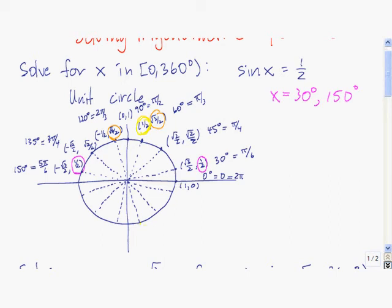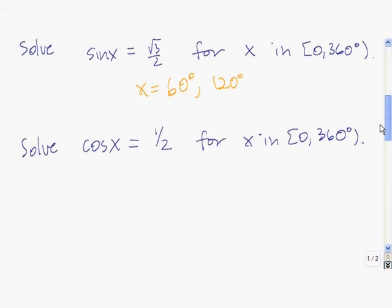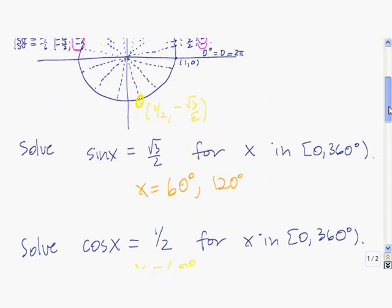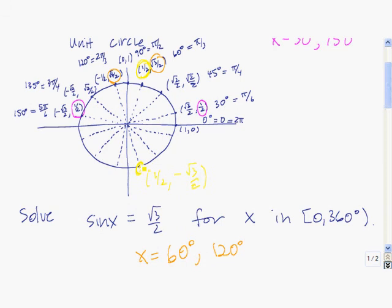But here's another spot. That spot has coordinates 1 half, negative root 3 over 2. So one solution is x equals 60 degrees, and the other solution is this angle here, which is 300 degrees.